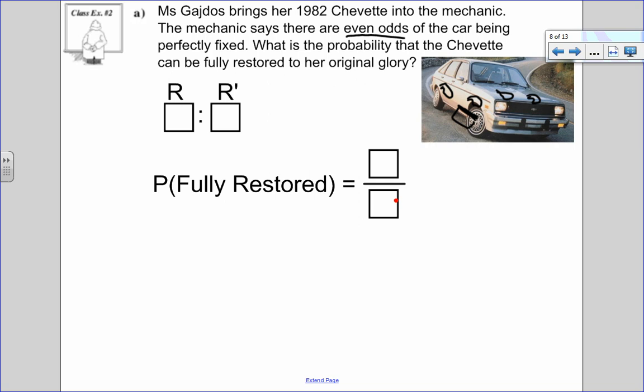So we're going to look at what even odds means. So even odds is restored to not restored. And it's an equal chance for both. So this would be a one to one ratio. One way it's going to be restored to one way it won't be restored. So if I want to look at the probability of it being fully restored, there is one way that it can be fully restored out of a total of two ways. And the reason I have a total of two is because one plus one is two, it's either restored, or it's not restored. So this is an example of going from odds to probability.